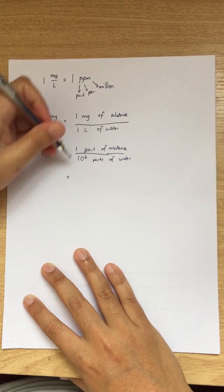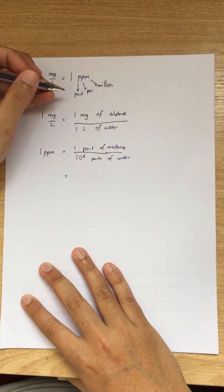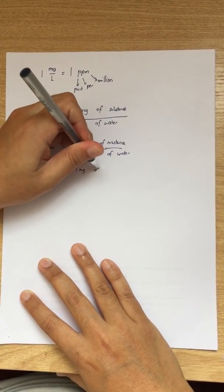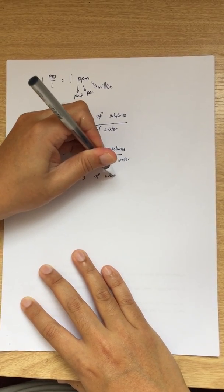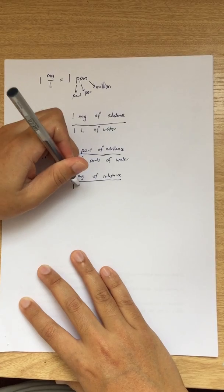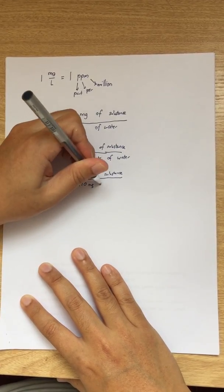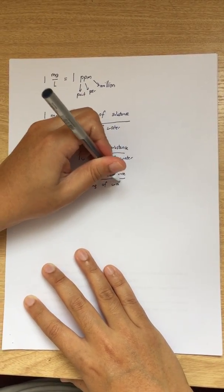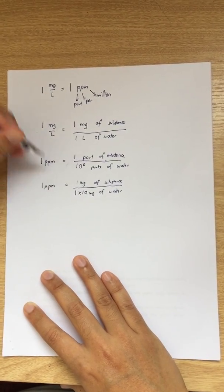If we would like to change part into milligram, we can also do that. One milligram of substance divided by one million milligram of water. So that is actually one PPM.